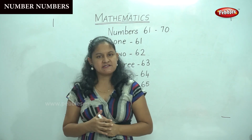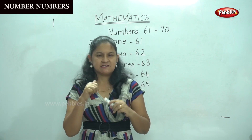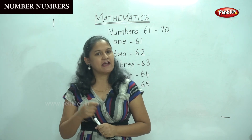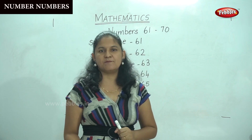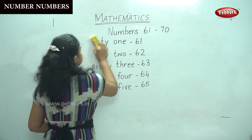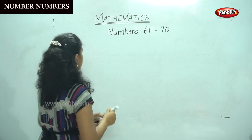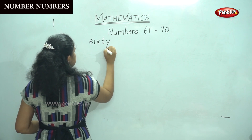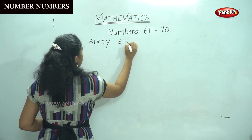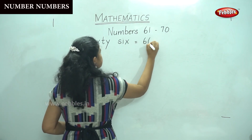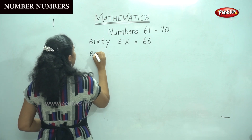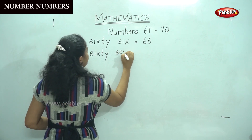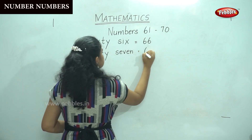Now we will move on to the next five numbers, that is numbers 66 to 70. So is it interesting children? Are you able to understand and say it along with me? So now we are going to number 66 to 70. SIXTY — S, I, X, T, Y — 60, SIX — S, I, X — 6, 66. SIXTY 60, SEVEN — S, E, V, E, N — 7, 67.